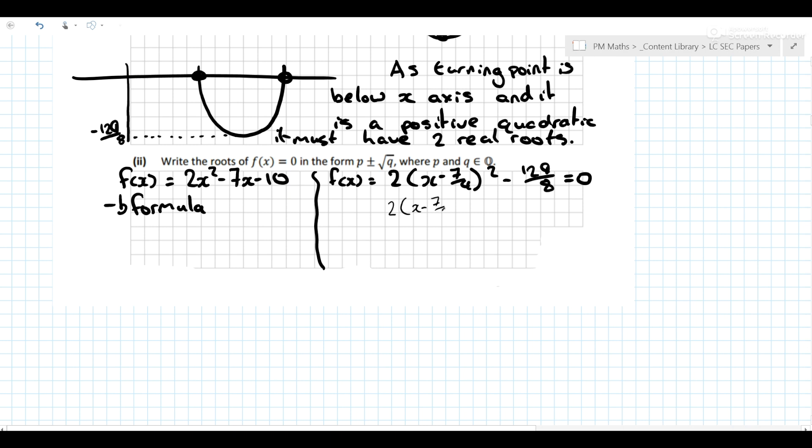(x - 7/4)². If I add 129/8 to both sides, then I can divide both sides by 2 or multiply both sides by a half to get rid of that. (x - 7/4)² is going to be 129/16.